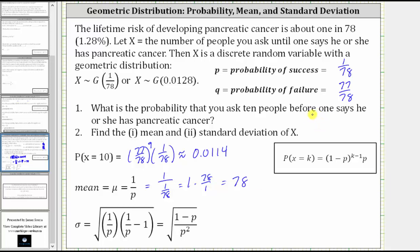And then finally, we're asked to find the standard deviation. We can use either of these two formulas here. They are equivalent. I'm going to use the second one. So we have the square root of, in the numerator, we have one minus p, which is one minus 1/78. This is divided by p squared, which is 1/78 squared.